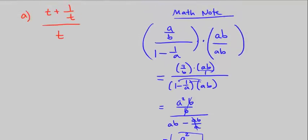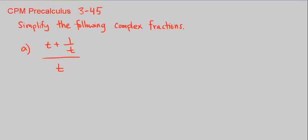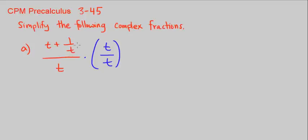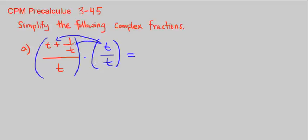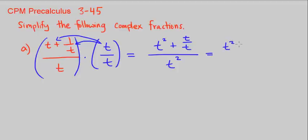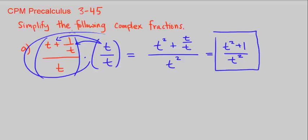Let's do Part A of this problem the same way. What is the denominator in the numerator? Looking at the top, do we have any fractions? Yes, we have T. In the denominator, we don't have any. So let's multiply by T over T — the only denominator in this complex fraction. Distributing T: T times T gives T squared, plus T times 1 over T gives T over T. That's in the numerator. In the denominator we have T squared. Simplifying: that equals T squared plus 1 over T squared. That's the simplified version of this complex fraction.